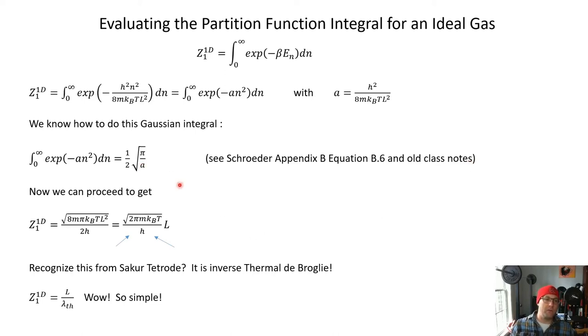So we can proceed to do the integral and just directly get that the single particle partition function for the 1d gas in a box is this expression. I'll do a little bit of simplification. Basically pull the L squared out and cancel the 2. You get square root of 2 pi m kbT times L over h.